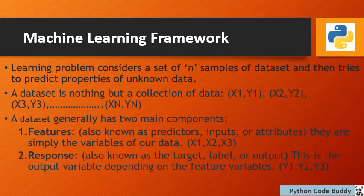First, we will cover the machine learning framework. A machine learning problem basically considers a set of N samples of data and then tries to predict the properties of unknown data from the same data set. A data set is nothing but a collection of data — for example, x1,y1; x2,y2; x3,y3 going up to the Nth data xN and yN.